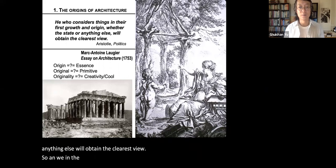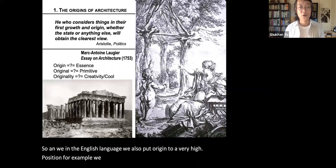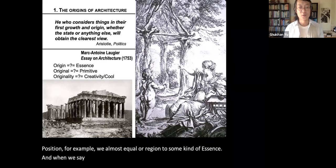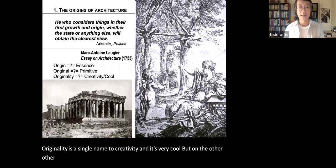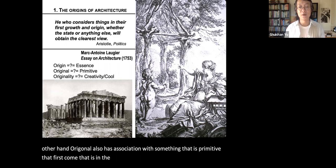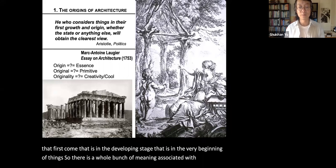In the English language, we put origin in a very high position. We almost equate origin with some kind of essence. When we say something is original, we mean it is innovative — originality is a synonym for creativity. But on the other hand, 'original' also has associations with something primitive, in the developing stage, at the very beginning of things. So there is a whole bunch of meaning associated with the word 'origin' itself.